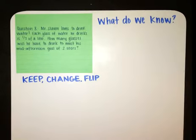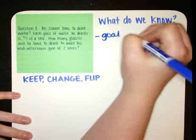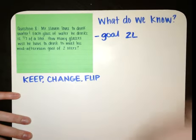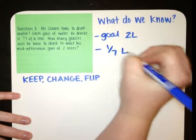What do we know? Well, we know the goal is to drink two liters by the mid-afternoon. We also know that he drinks one seventh of a liter at a time.